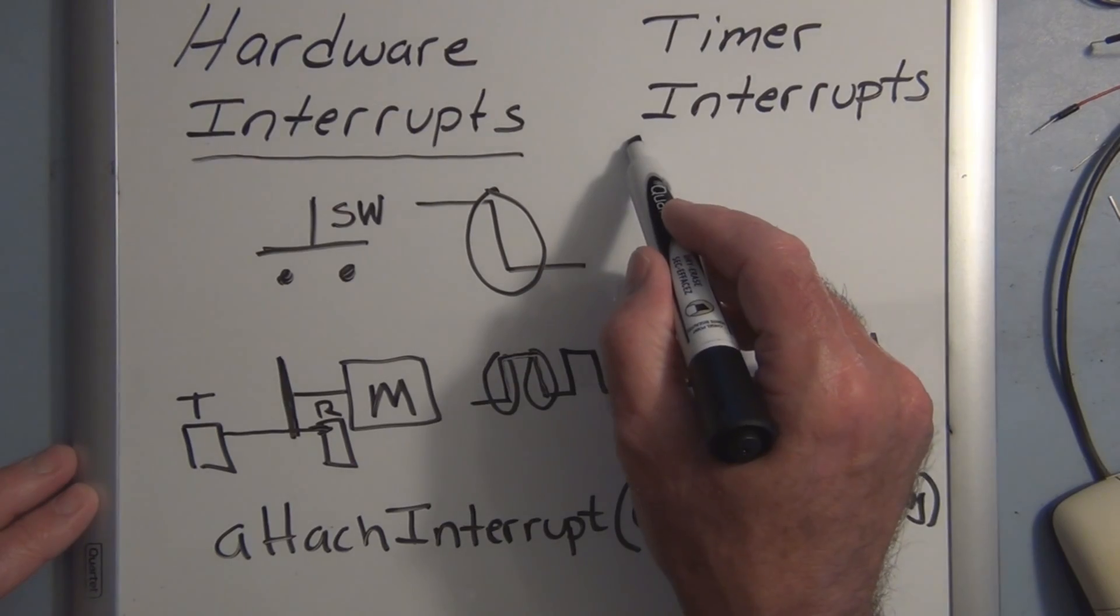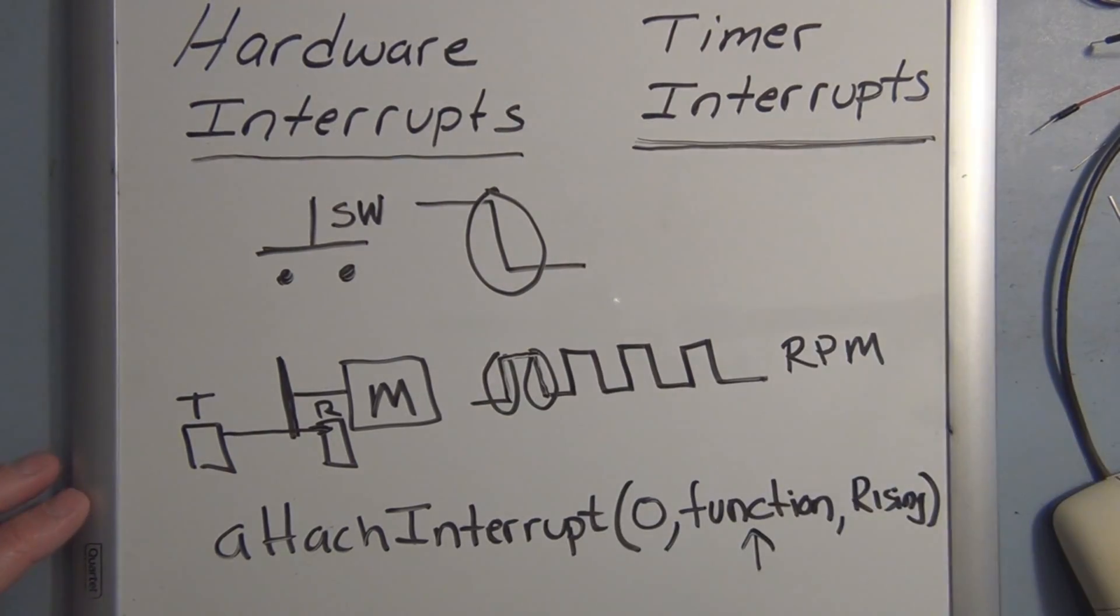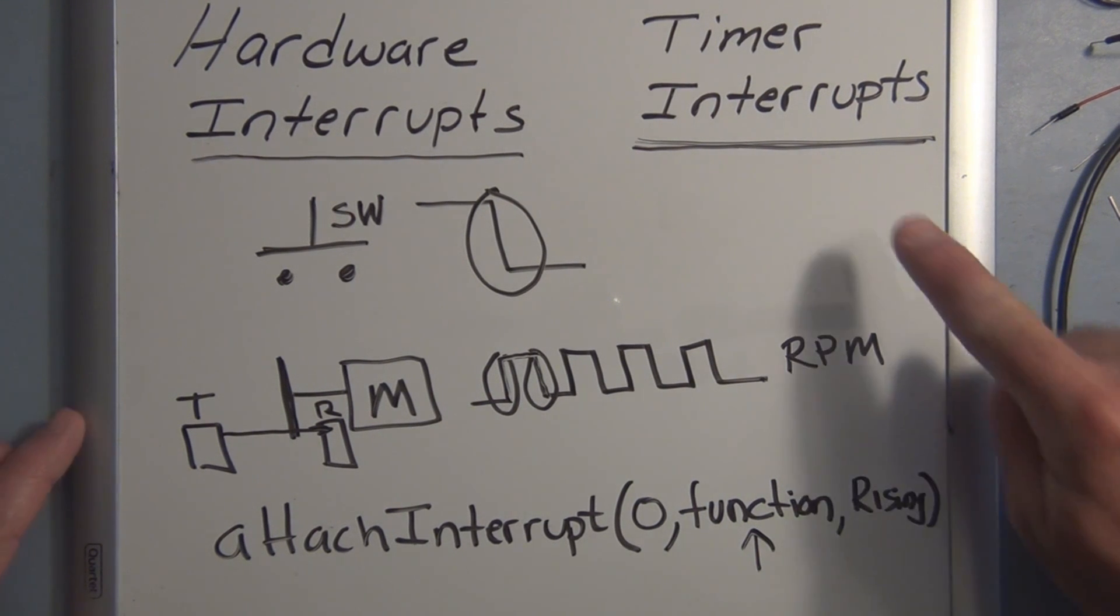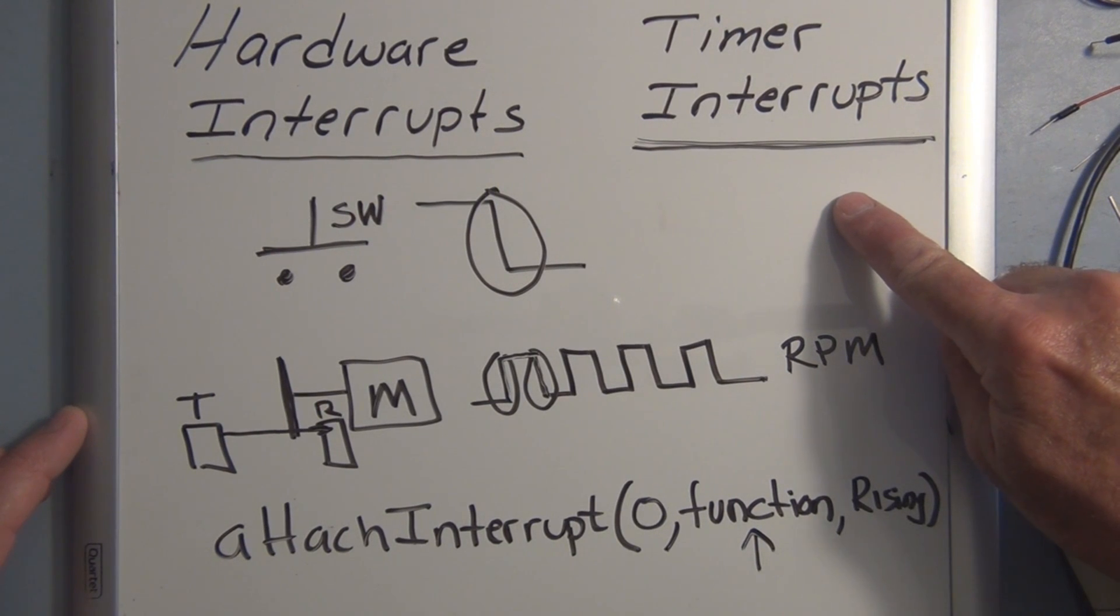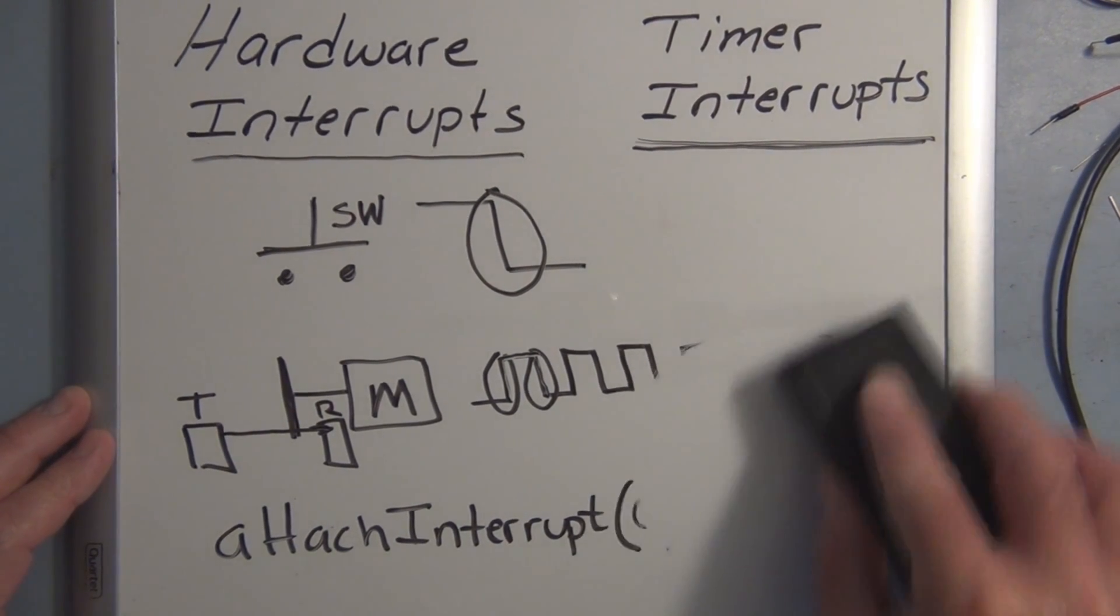In both of these cases, hardware is being monitored and the hardware causes a state change, and the software responds to that state change using this attachInterrupt function. But we also have the ability to use timer interrupts with the Arduino. Instead of having an interrupt triggered by monitoring external hardware, we can use the timing that's going on onboard the Arduino to trigger an interrupt.